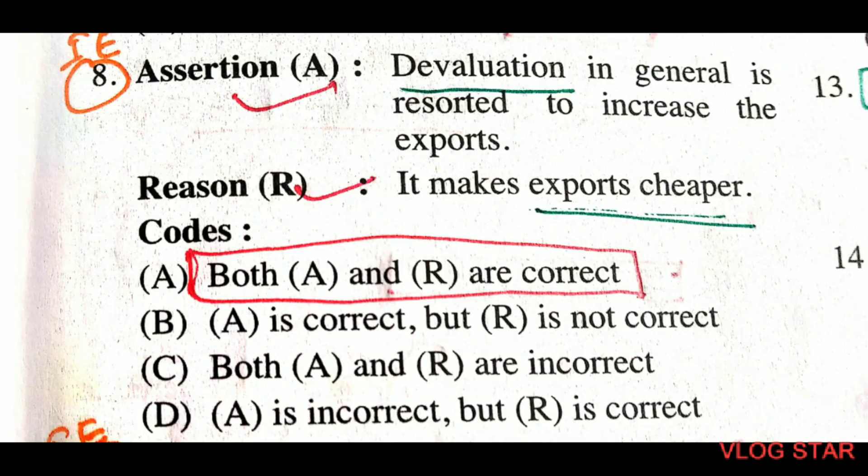From the December 2010 Paper 2, question number 8, assertion-reason. Assertion: devaluation in general is resorted to in order to increase exports. Reason: it makes exports cheaper. Both assertion and reason are correct.